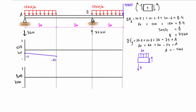In the next region nothing is happening to the beam, so the shear force stays constant at negative 25 kilonewtons. At the next point of interest, just to the right of support B, we include the 75 kilonewton upward reaction. We have 75 up and 25 down, so the internal shear force is 50 kilonewtons pressing down — that's the positive sense — bringing us from negative 25 up to positive 50.